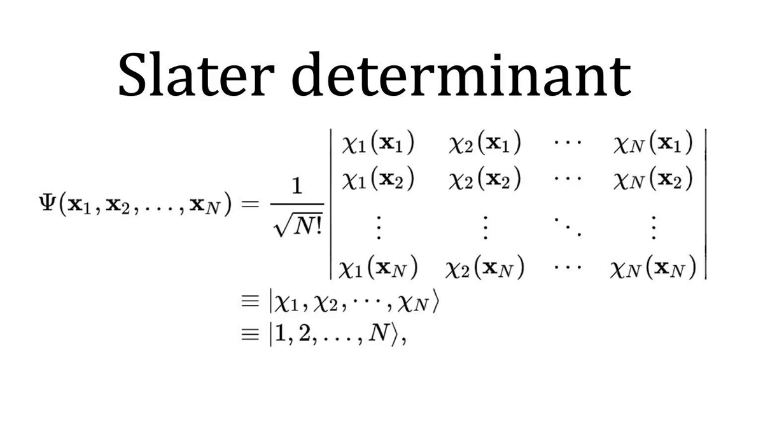A Slater determinant containing two electrons with the same spin orbital would correspond to a wave function that is zero everywhere.